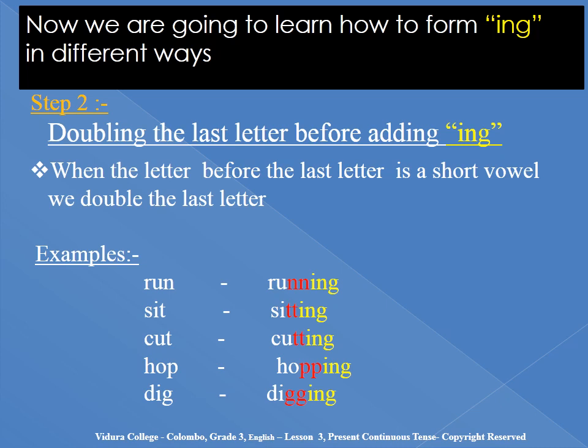Run — 'n' is the last letter, after the vowel 'u', so we double 'n.' Sit — we make it double 't.' Cut — the last letter is 't', we make it double 't.' Hop — the last letter is 'p', we double 'p.' Dig — the last letter is 'g', we write double 'g.' Then after that we add -ing: running, sitting, cutting, hopping, digging.